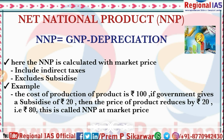Suppose the cost of production of a product — say a calculator — is 100 rupees. The government gives a subsidy of 20 rupees. So the factor cost is 100 rupees, but with a 20-rupee subsidy from the government, the company only needs 80 rupees more from the buyer. The product price reduces by 20 rupees due to the subsidy, so the final price is 80 rupees. This is called NNP at market price.